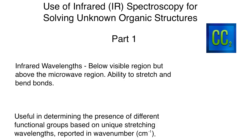Welcome to the next lecture, where we start discussing infrared spectroscopy. The last lecture dealt with mass spec; now we're doing IR before we move on to NMR, which will take up the bulk of time when solving unknown spectra. In terms of IR, I want to break this down into two parts because you have a large range in which you can find bands, and each section contains different functional groups.